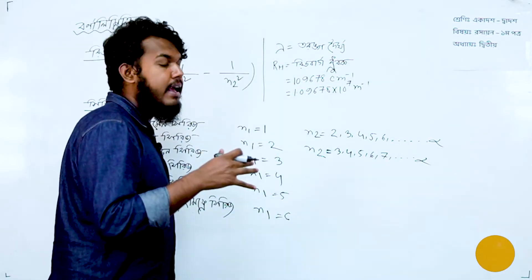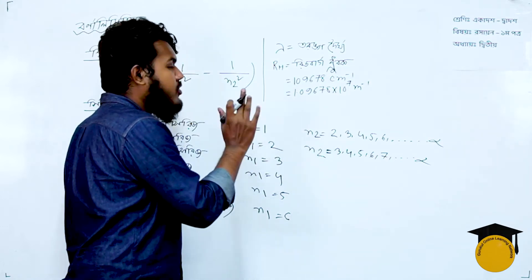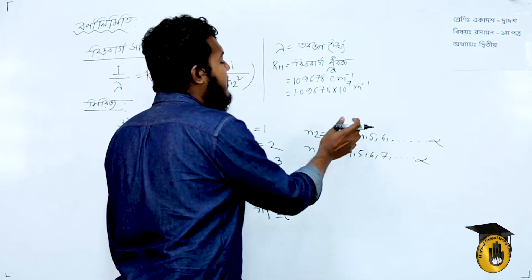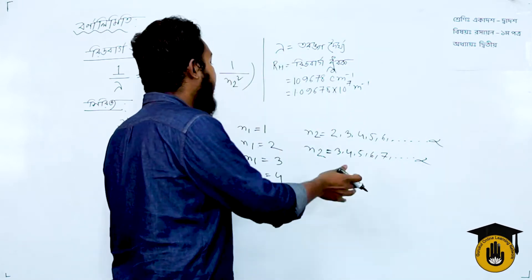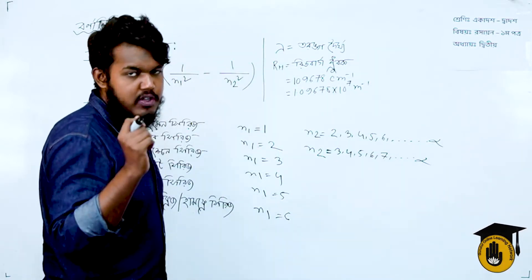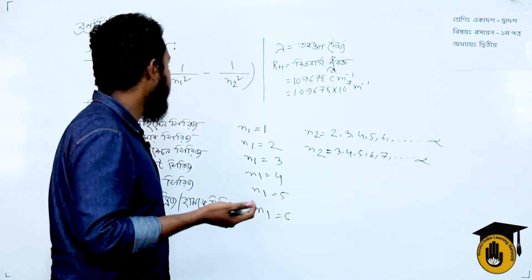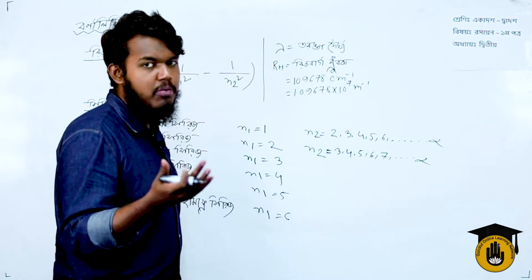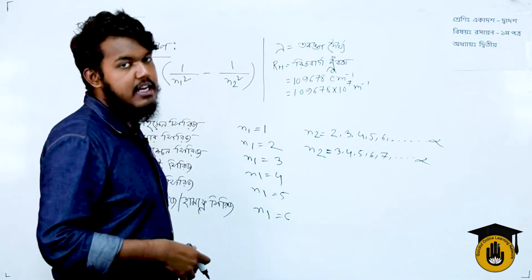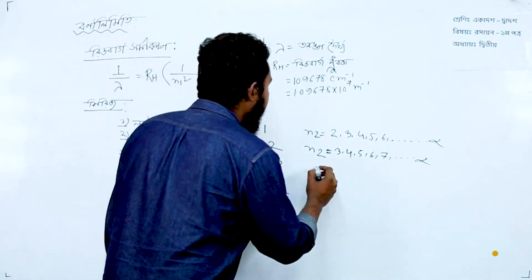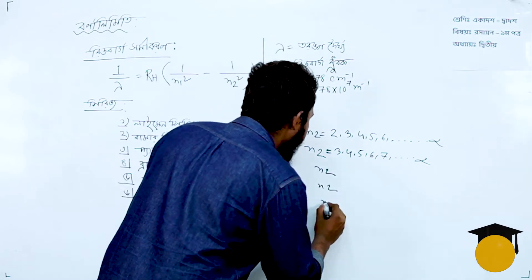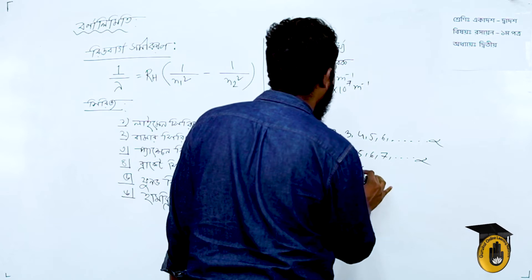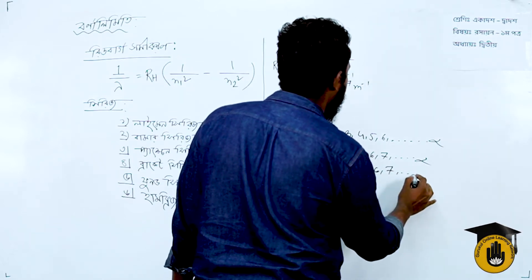For the Lyman series, n2 goes from 2, 3, 4, 5, 6 to infinity. For the Balmer series, n2 goes from 3, 4, 5, 6, 7 to infinity. For the Paschen series, n2 goes from 4, 5, 6, 7, 8 to infinity. For the Brackett series, n2 goes from 5, 6, 7, 8, 9 to infinity.